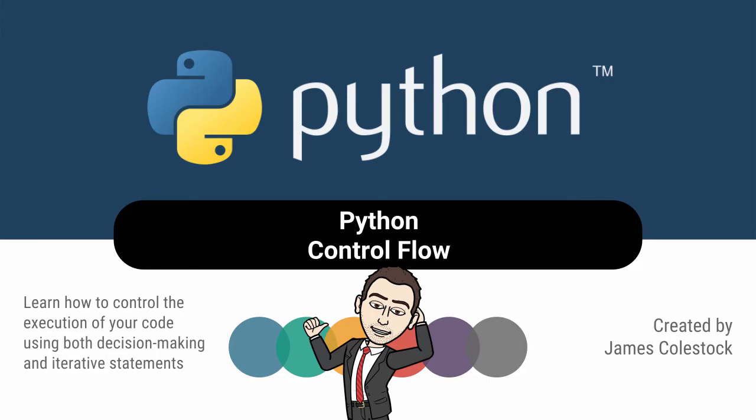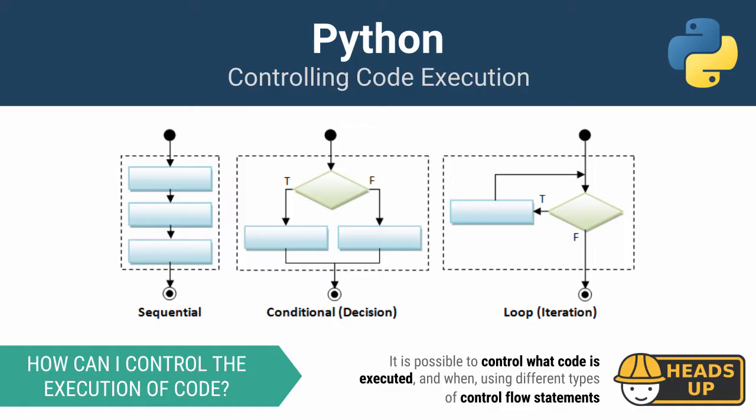Today we're going to talk about control flow statements in Python. Control flow statements allow you to control the execution of your code — when code should execute, how many times, or if at all. There are three basic families of control flow statements and we're going to talk about each.